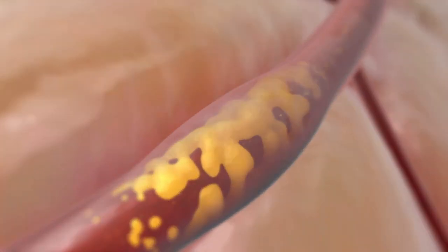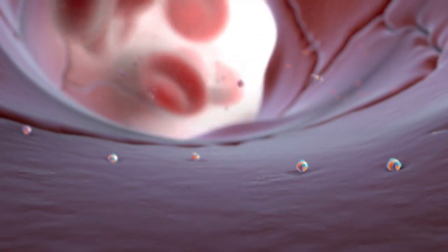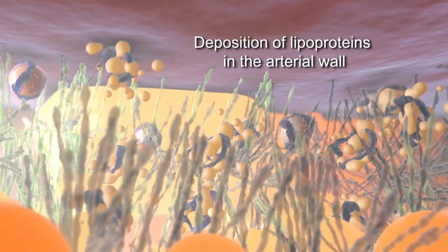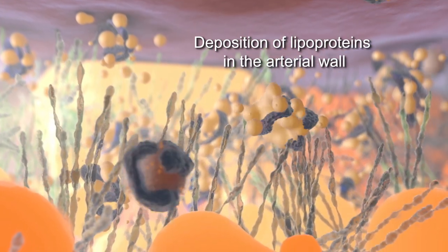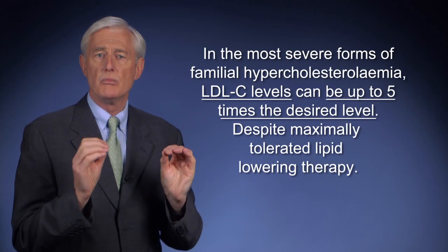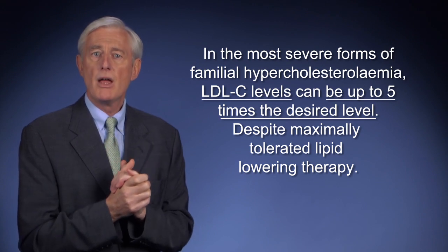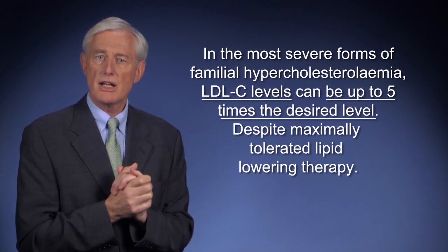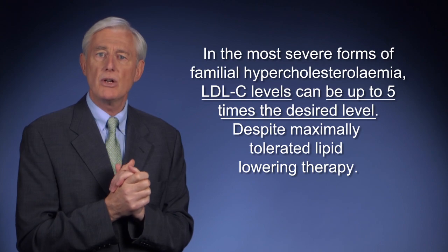In patients with the extreme forms of FH, lifelong exposure to extremely high levels of atherogenic ApoB-containing lipoproteins, especially LDL and lipoprotein little a, results in the early development of aggressive atherosclerosis. Approximately 70% of the body's cholesterol is carried by LDL particles. So LDL cholesterol has become the standard measure of atherogenic lipoproteins. In the most severe forms of familial hypercholesterolemia, LDL cholesterol levels can be up to five times the desired level, despite maximally tolerated lipid-lowering therapies.